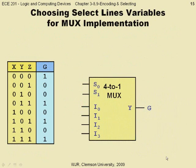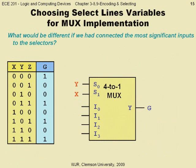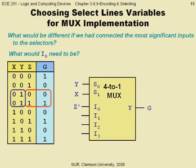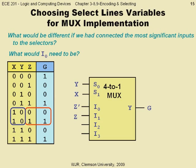Another good question: what would be different if we had connected the most significant inputs to the selectors — that is, x and y instead of y and z? When x and y are both 0, we see that we need the opposite of z, so we tie i0 to z-complement. For xy equal to 0,1, the output should be whatever z is, so we tie i1 to z. For xy equal to 1,0, we also have that the output should equal z, so we also tie i2 to z.